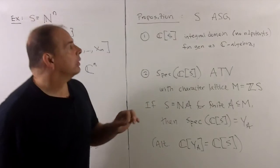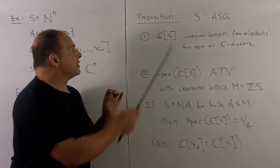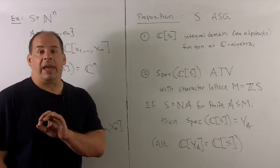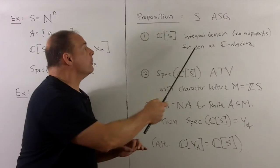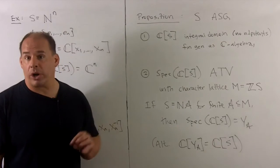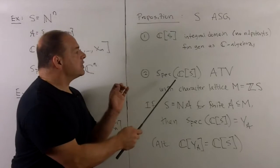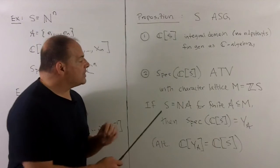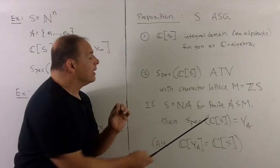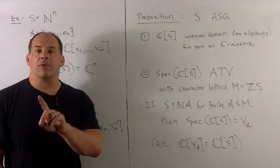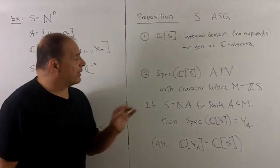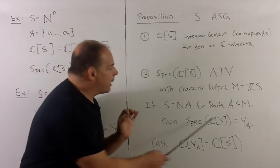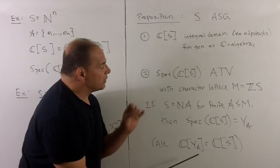Now in general, this is going to be version 4 of affine toric variety. With the proposition: we have S affine semigroup. If we take the C-algebra for S, it's going to be an integral domain, so no nilpotents, finitely generated as a C-algebra. So this is going to correspond to an affine variety as its coordinate ring. If we take Spec of this, it's going to be an affine toric variety with character lattice M equal to the Z-span of S. Now if S is equal to the natural number span of A for a finite A inside of M, then Spec of the algebra is just going to be isomorphic to Y sub A from before. We know every affine toric variety is supposed to be isomorphic to some Y sub A. A slightly more transparent way of saying this is just that the coordinate ring for Y sub A is equal to the algebra for S.